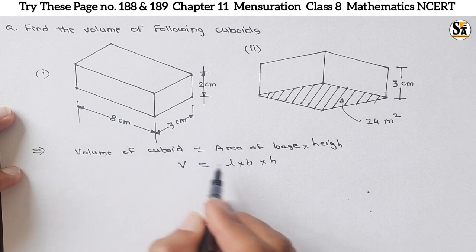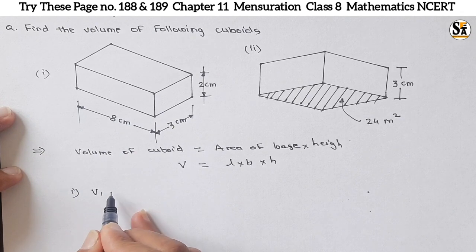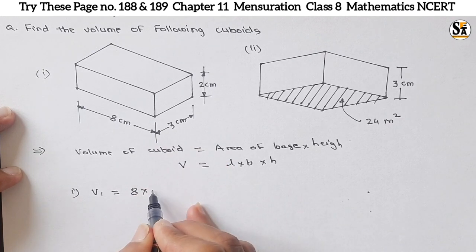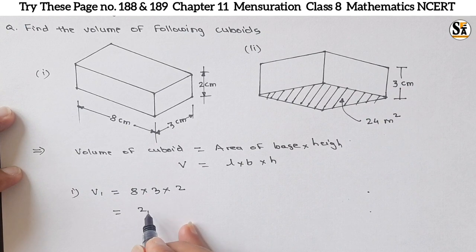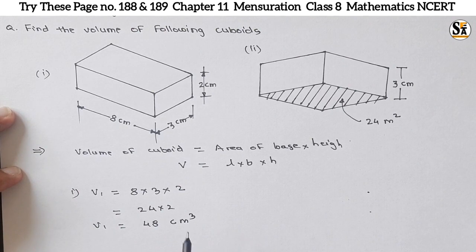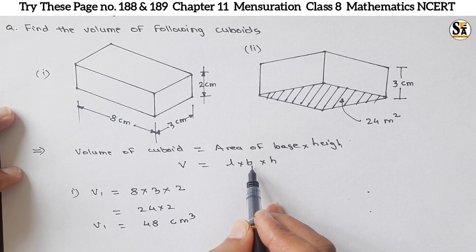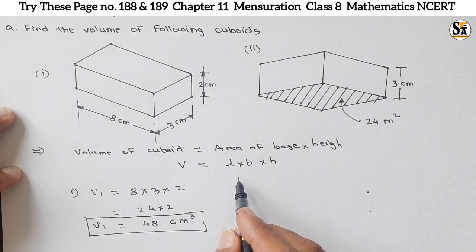Now put the values of l, b, h in the formula. For the first example, V₁ = l × b × h = 8 cm × 3 cm × 2 cm. That is 8 × 3 = 24, and 24 × 2 = 48. So V₁ = 48 cm³. The unit is centimeter cube because we are multiplying three centimeter units together.